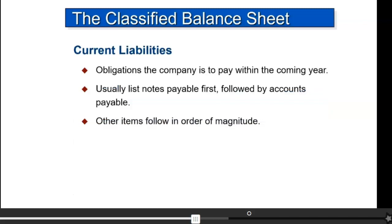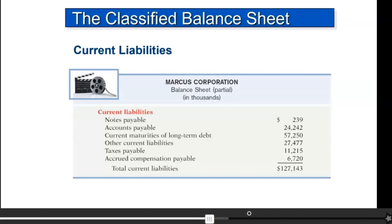Current liabilities are debts that need to be paid within the next three, six, or 12 months. We show them in no particular order, but here we show notes payable, accounts payable, current maturity on long-term debt, taxes payable, and so on — all of which will have to be paid off in the coming 12 months.